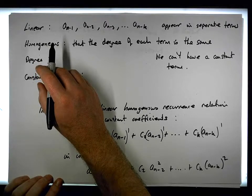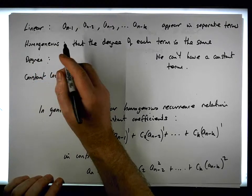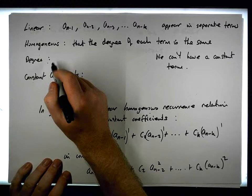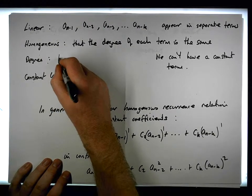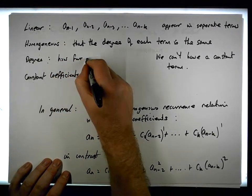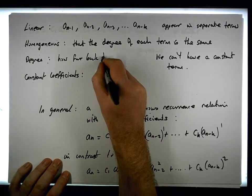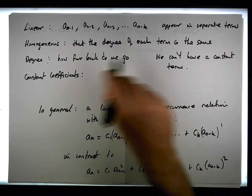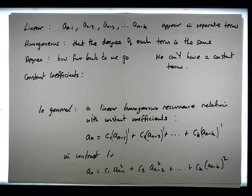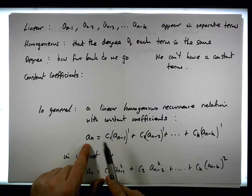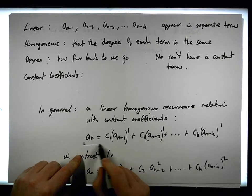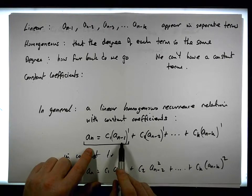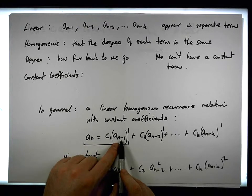The degree is how far back do we go, if that makes sense. How far back do we go in relation to our definition? So, you can see that a_n here, if we were to define it like this, this would be degree 1, because we're only looking back one position. If we were to define it like this, this would be of degree 2, because the a_n is defined in terms of two previous terms.